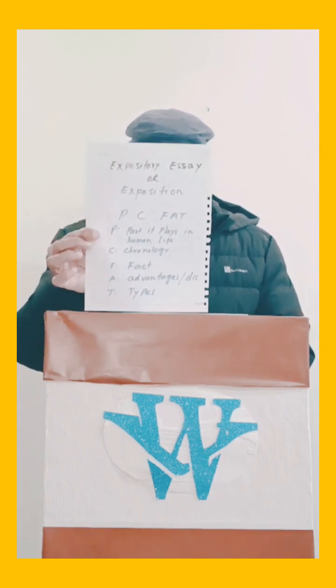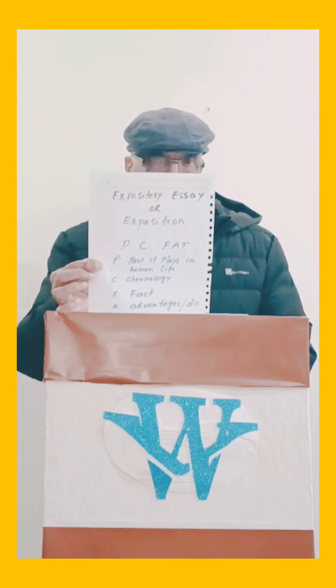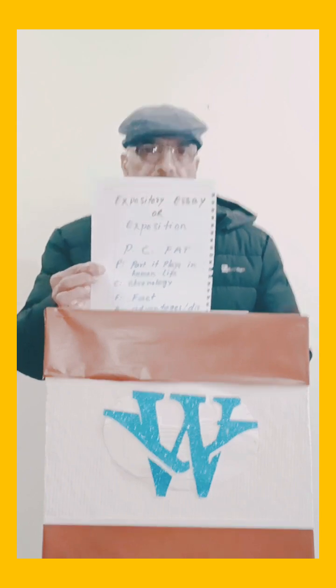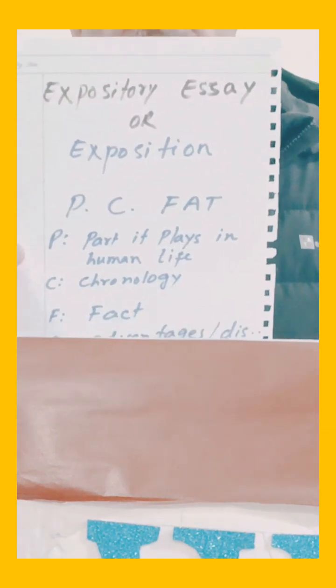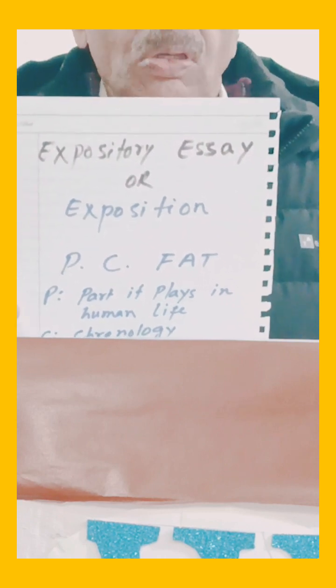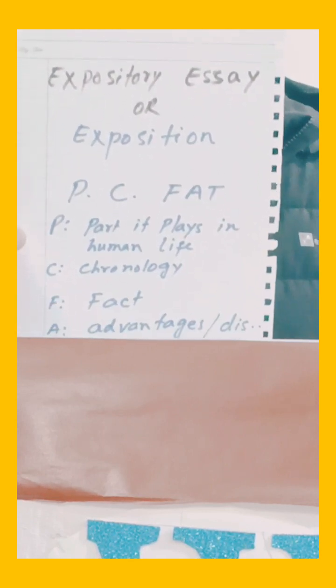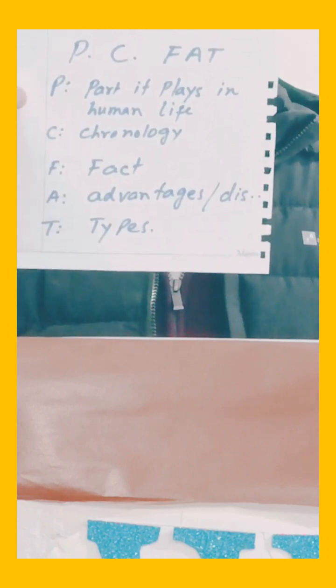To write an exposition, we follow a simple formula: PCFAT. P means the part it plays in human life. C means chronology, that is history. F stands for fact. A is advantages or disadvantages, and T is types. These are the five things you need to include in your exposition.